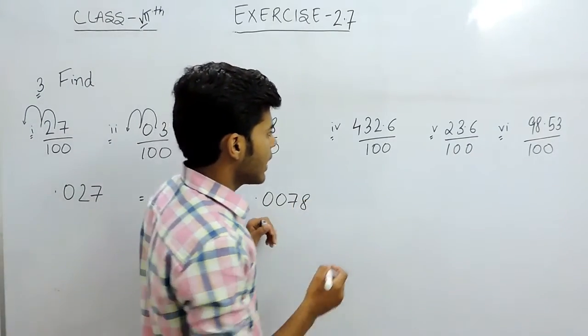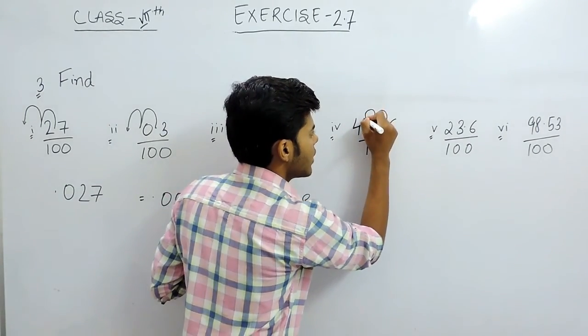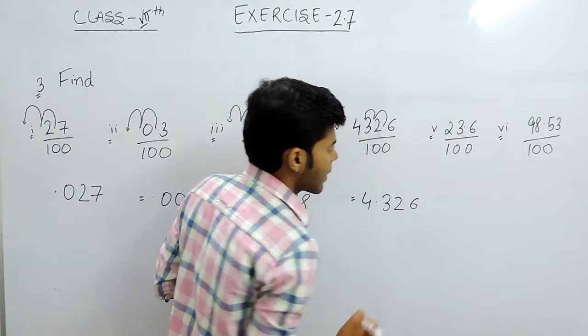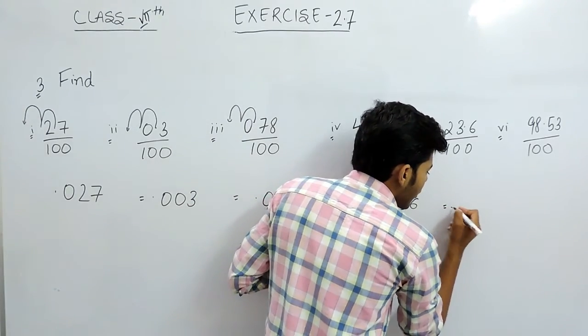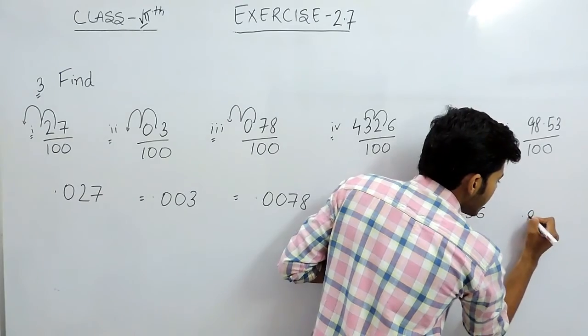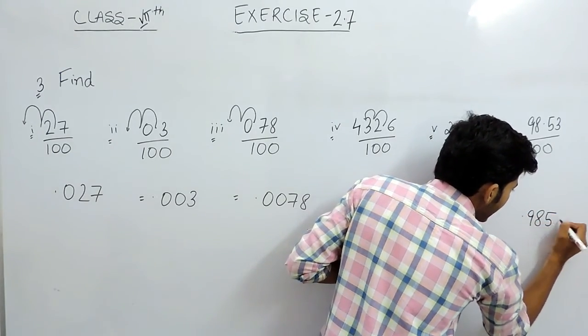Now in this one, the answer will be 4.326. Here it will be 0.0236, and the last part it will be 0.9853.